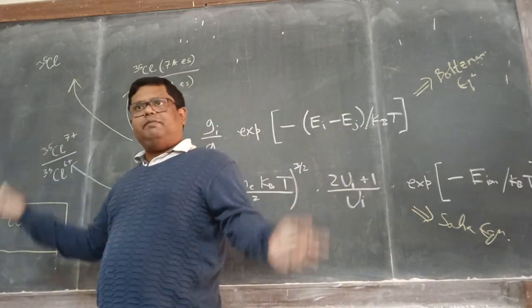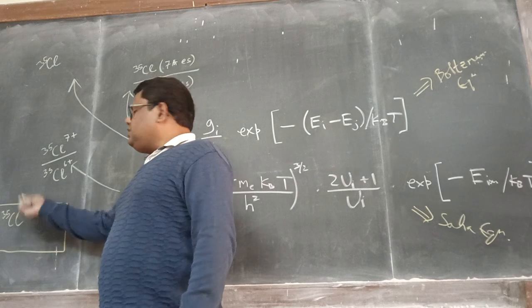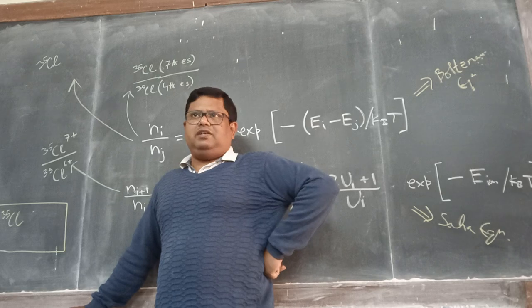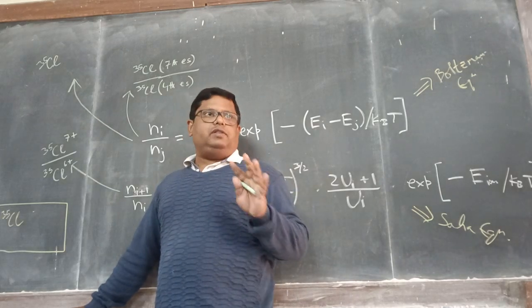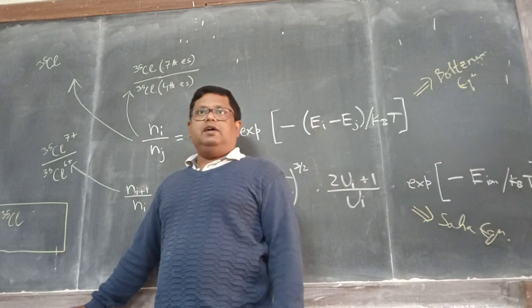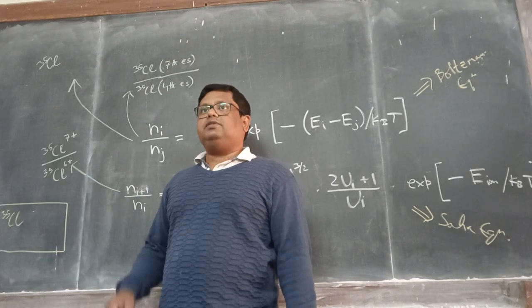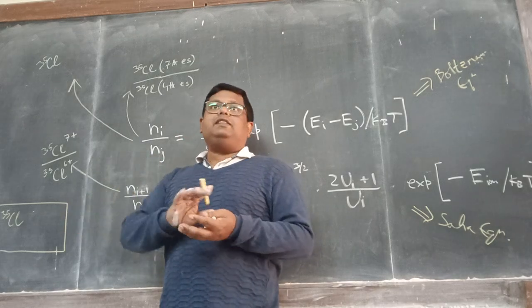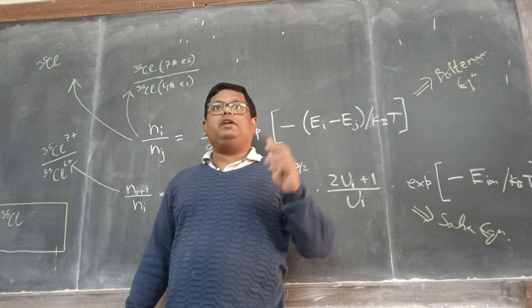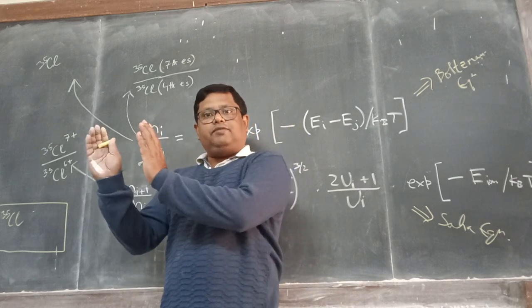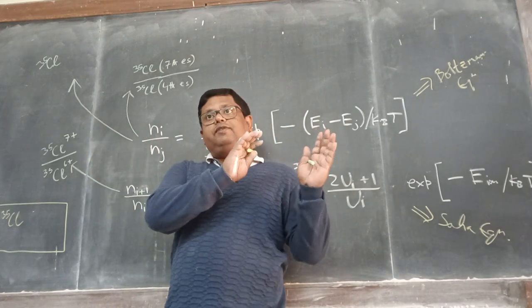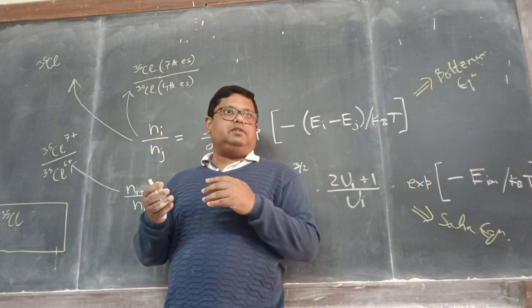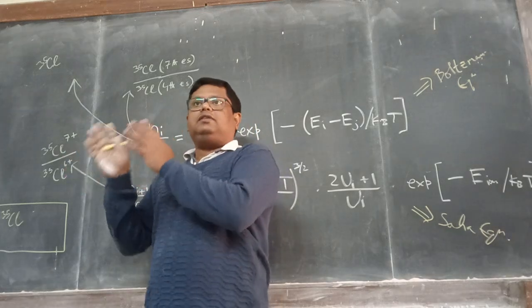Say at some high temperature, initially I have 1035 chlorine atoms. After some time, when the temperature is sufficiently high, out of 1035 chlorine atoms there may be 535 chlorine atoms and 535 chlorine ions. But those ions may be in different levels.